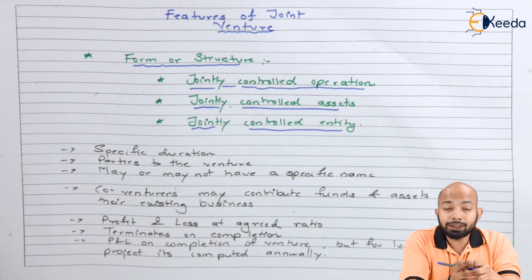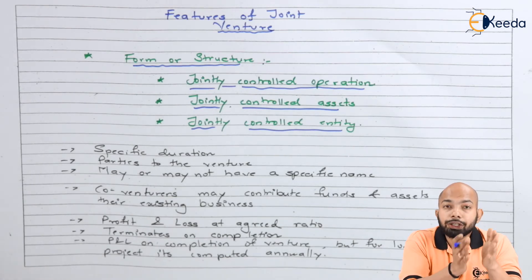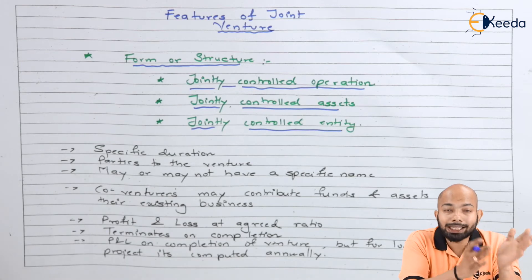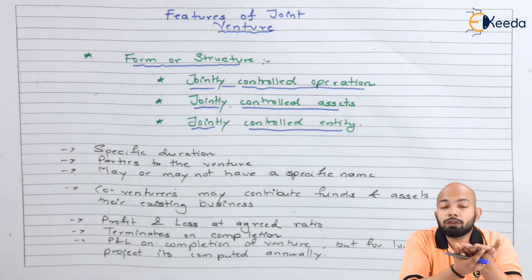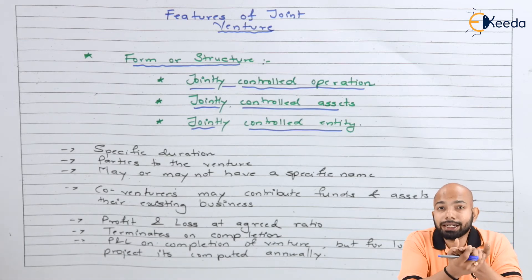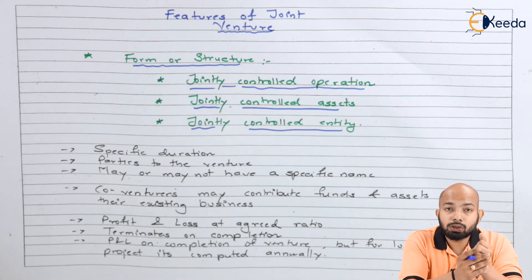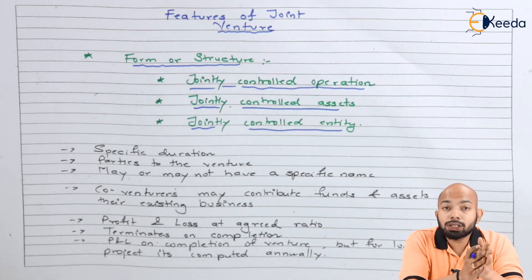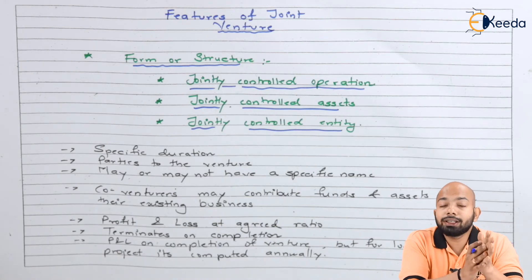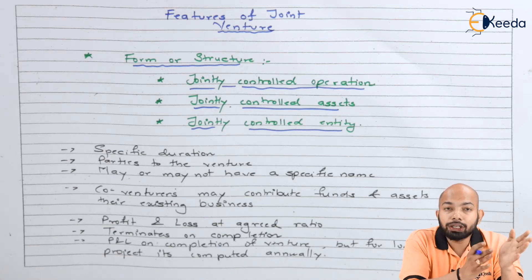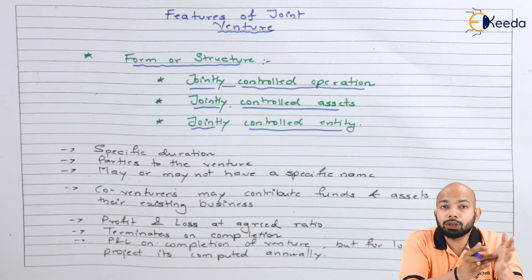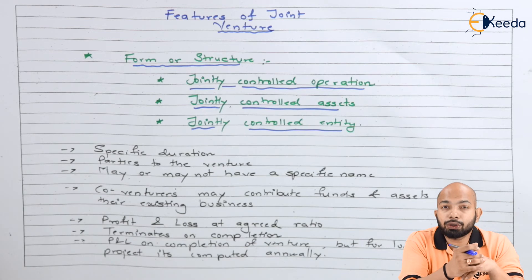The entity of this venture will be based on the controlling of joint operations. Not just one specific partner will have the rights of controlling it, unless agreed upon in the specific agreement. If the agreement specifies otherwise, it can be done; but if there is no such agreement, it is assumed that there is joint operation, joint entity, and joint controlling. This is one of the basic features of the form and structure of a joint venture.